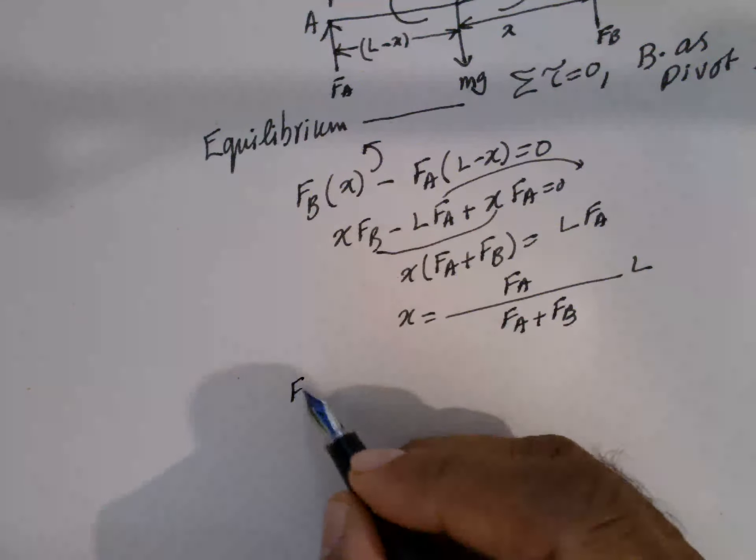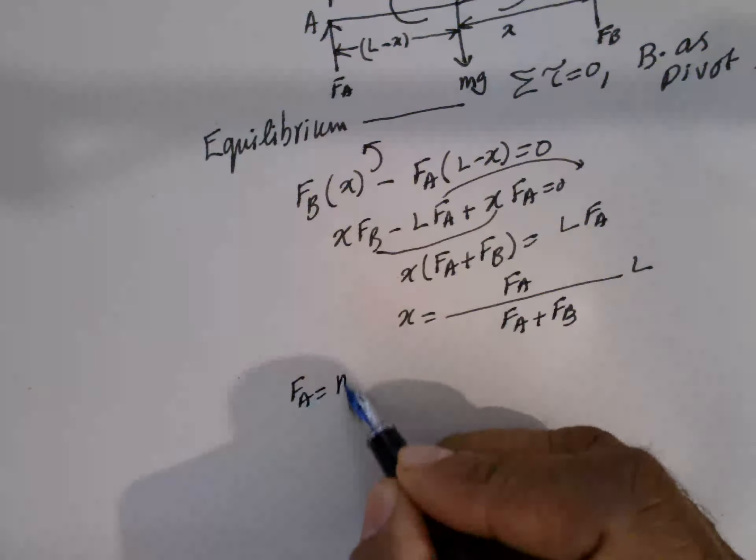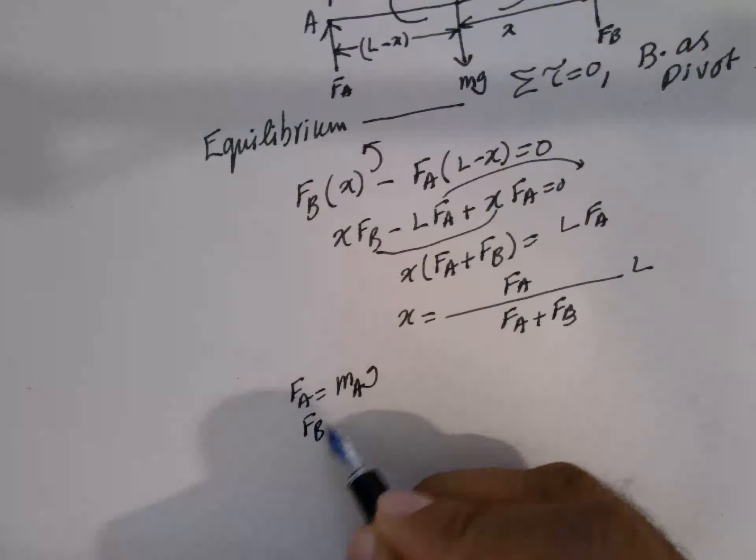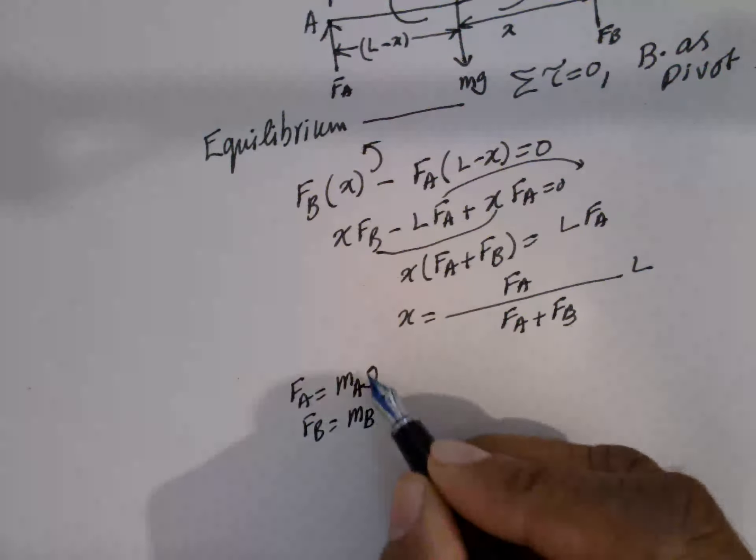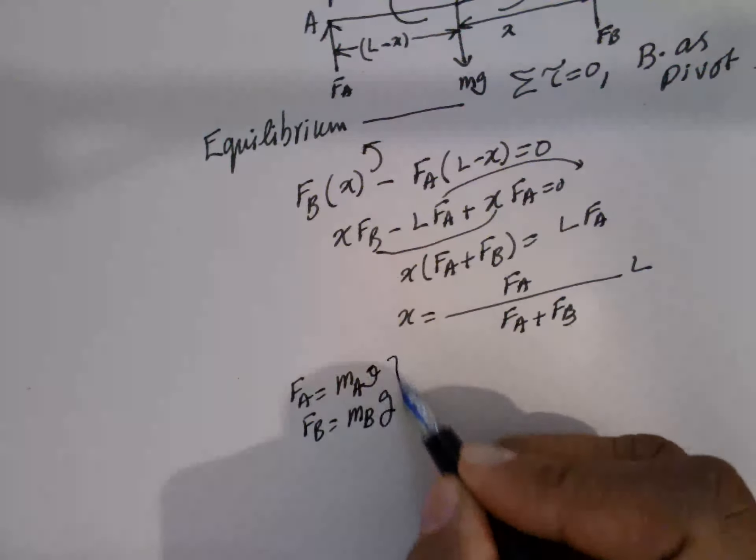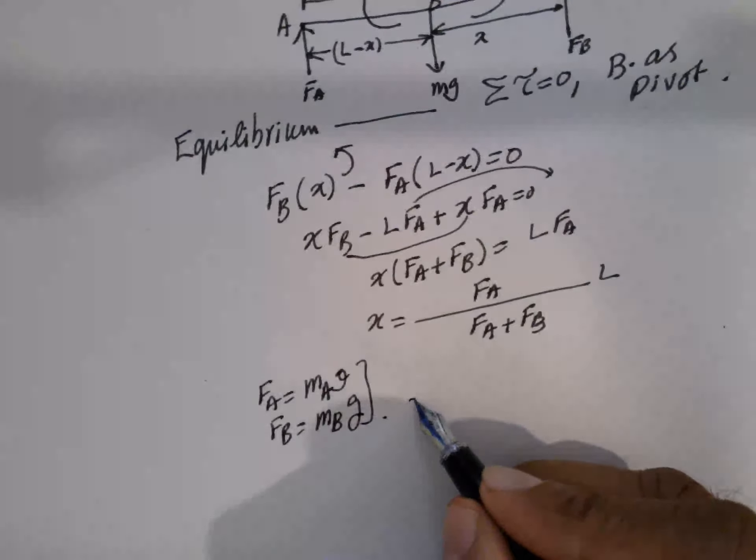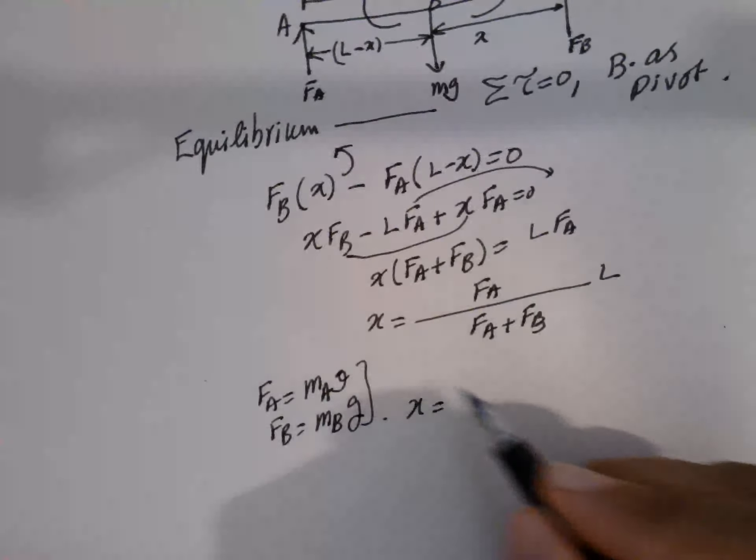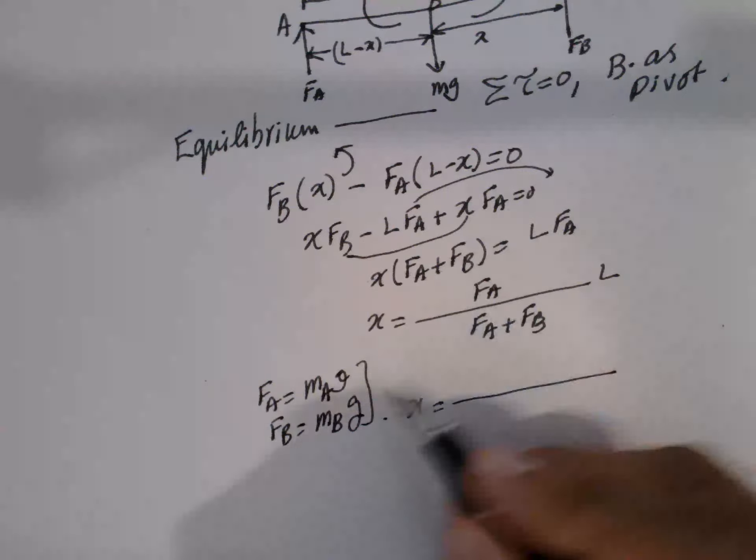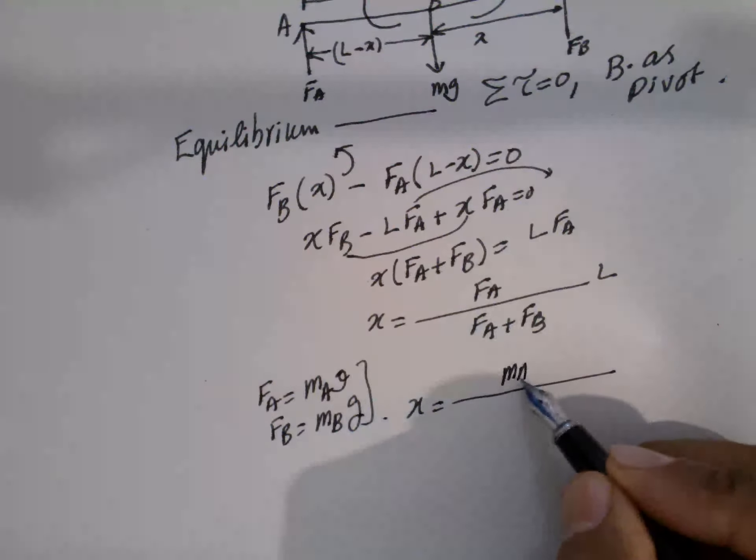FA is equal to MA g. FB is equal to MB g. So this is equal to X is equal to g, g cancel. So MA,